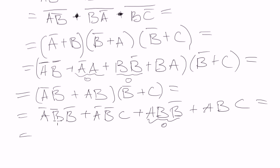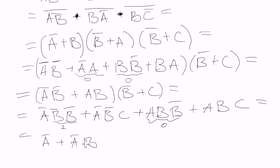So B negated·B negated simplifies to B negated - the same variable multiplied by itself is itself, as you might remember from the first lecture. So the whole thing will be A negated plus A negated·B·C, plus A·B·C.